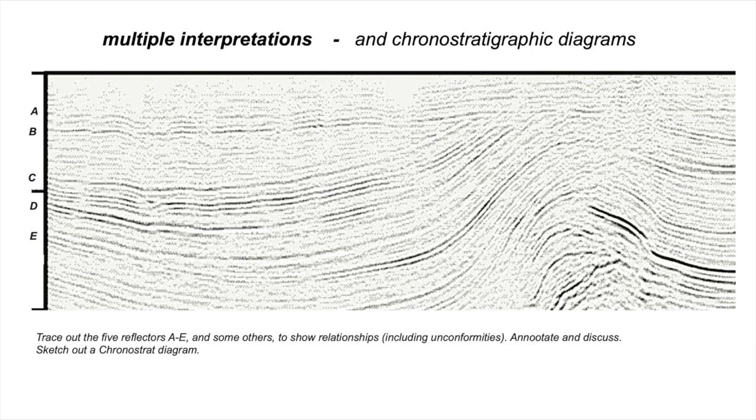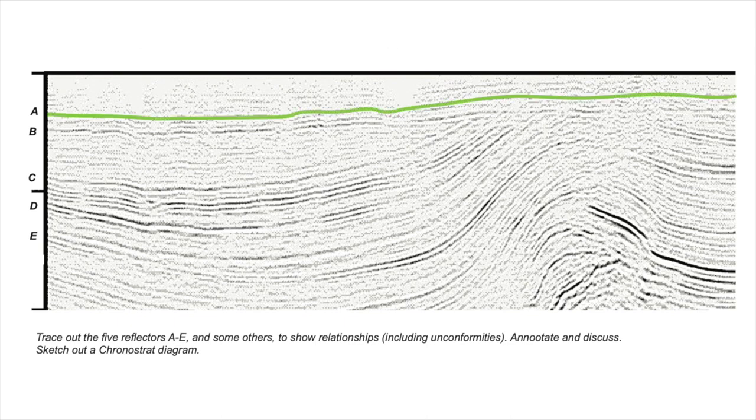So let's start off building our first interpretation. Here we picked the shallowest horizon, A, across the profile, shown here in light green. Let's keep moving down and pick horizon B, running across like this.